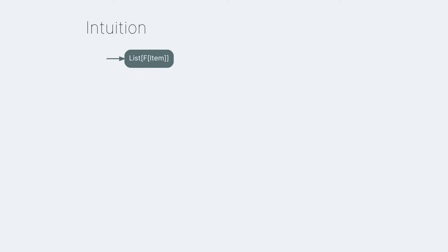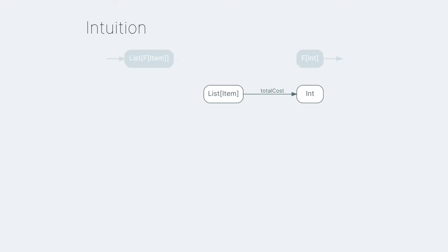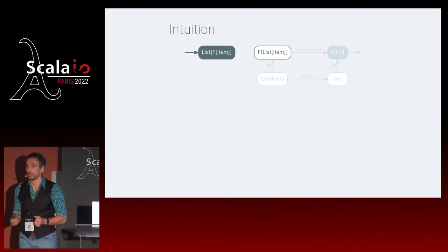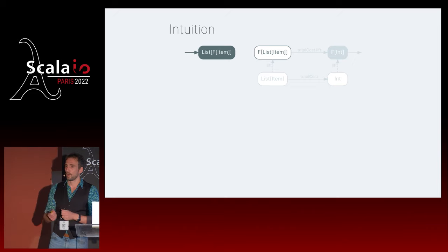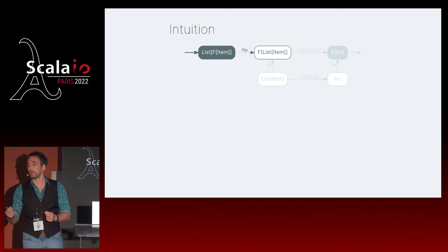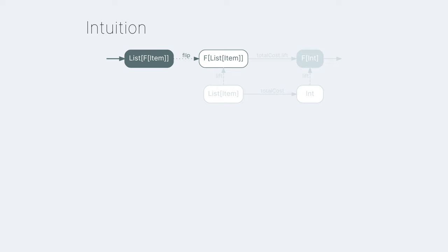Back to drawing. Our input is the list of F of item, our desired output is F of list of item, and the tools we have should be pretty familiar. We want that to commute. We have a function that takes a single parameter, so we lift it - that's a reflex. And it gets us closer, because now there's almost a path from input to desired output. All we need is to link these two nodes: go from a list of F into an F of list - sort of swapping the type constructors. So we wish for a function called flip.